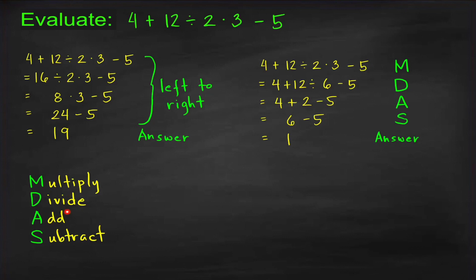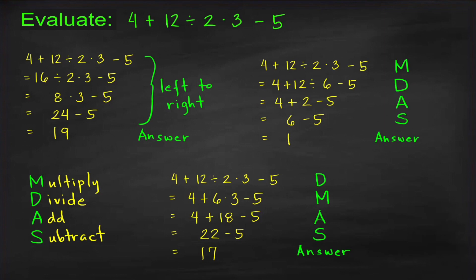Some might use the MDAS rule and correctly think that multiplication and division are of the same level and must be performed from left to right, then followed by addition or subtraction from left to right. So 12 divided by 2 is 6, then 6 times 3 is 18, then 4 plus 18 is 22, and 22 minus 5 equals 17. As we can see, we have three different answers: 19, 1, and 17.